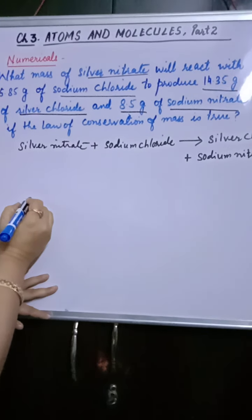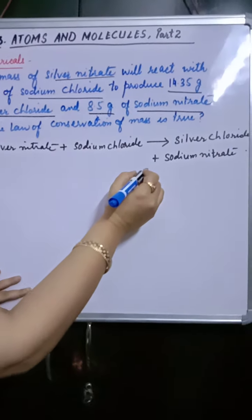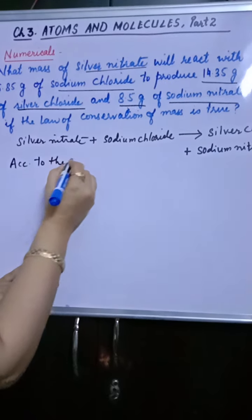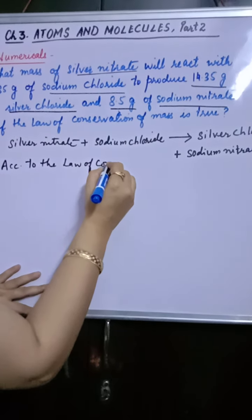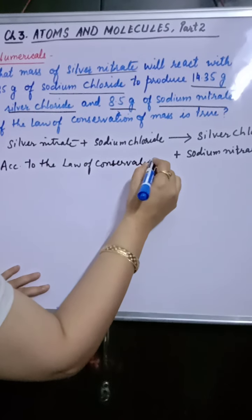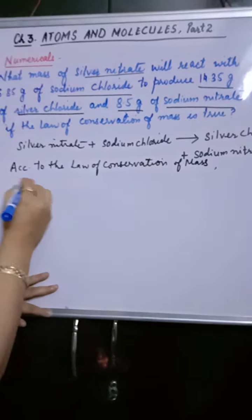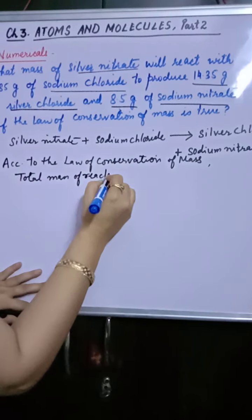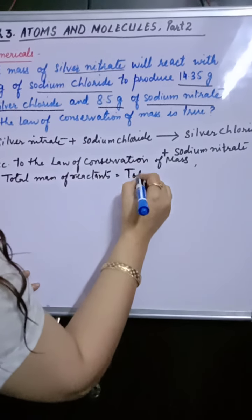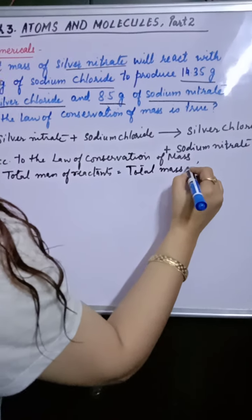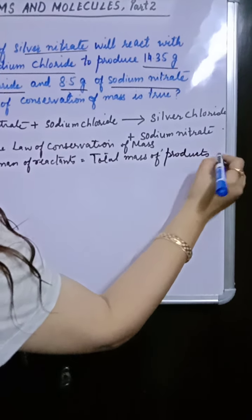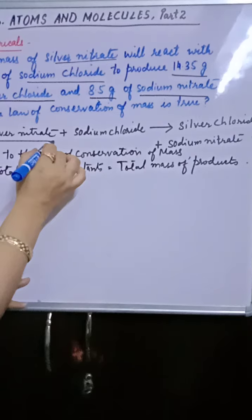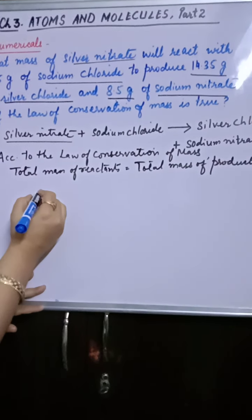So what you can do? Yahaan per aap next usma step me kya likihi. Mass of silver nitrate plus mass of sodium chloride will be equal to, I am writing, according to the law of conservation of mass. In the same way you have to do, total mass of reactants is equal to total mass of products. So total mass, yahaan per humei pata hai silver nitrate ka mass. Doh maine shuru me initially likha tha hai. Silver nitrate ka mass nahi diya hua hai. Toh aap likh sakte hai x.